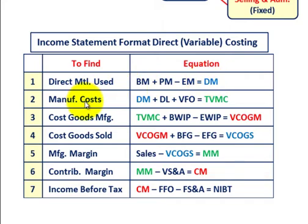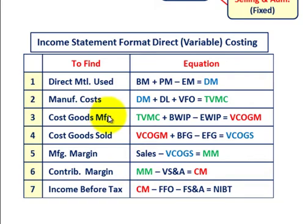For step two, total variable manufacturing costs: take those direct materials used, add direct labor, plus variable factory overhead — that equals total variable manufacturing costs. For step three, variable cost of goods manufactured: take total variable manufacturing costs, add beginning work-in-process, minus ending work-in-process, and that equals variable cost of goods manufactured.